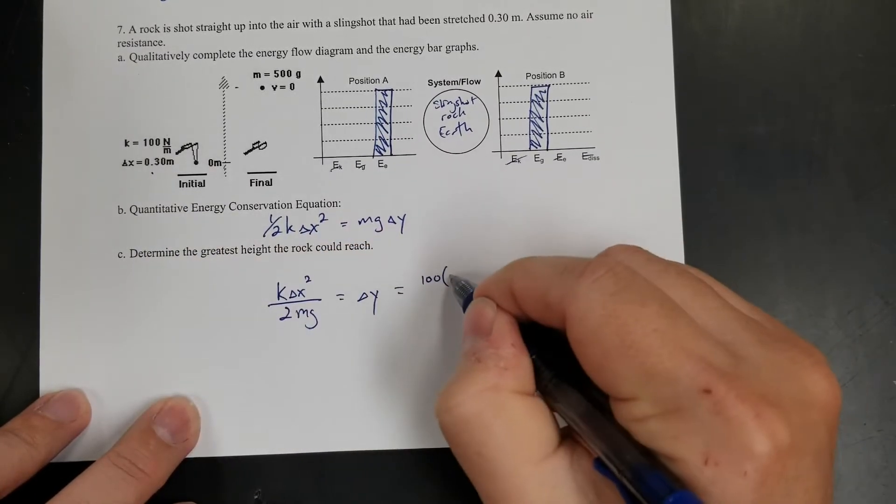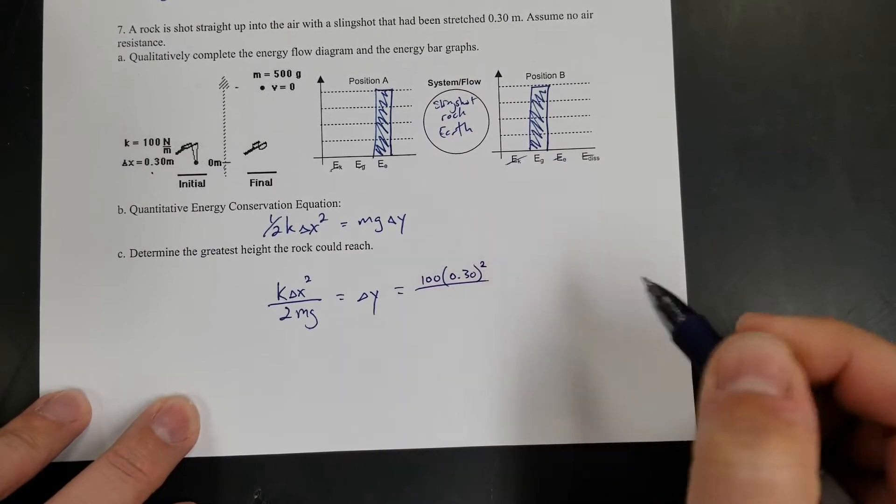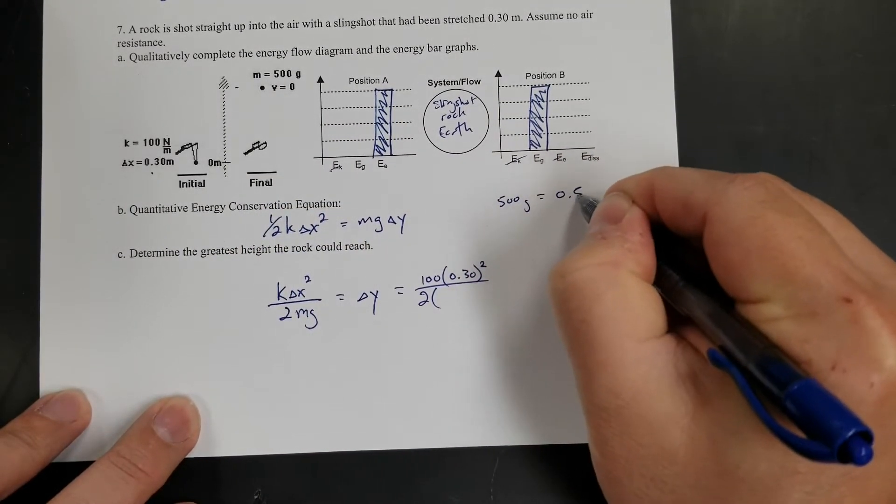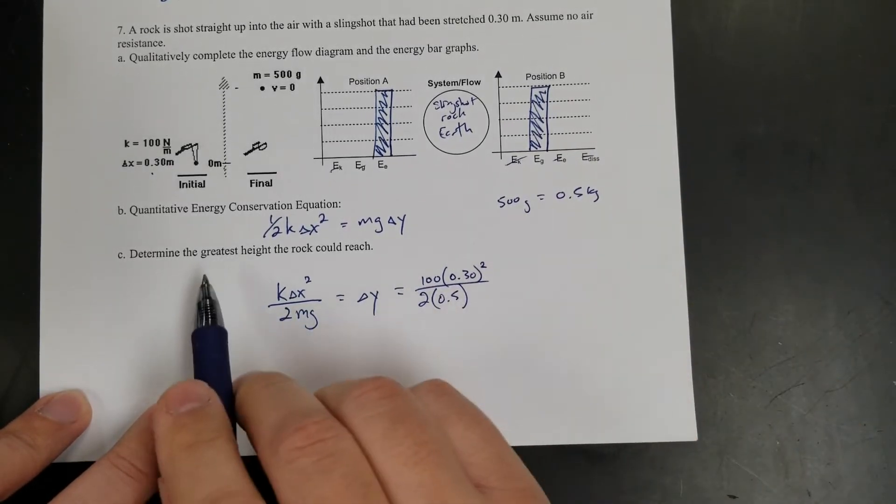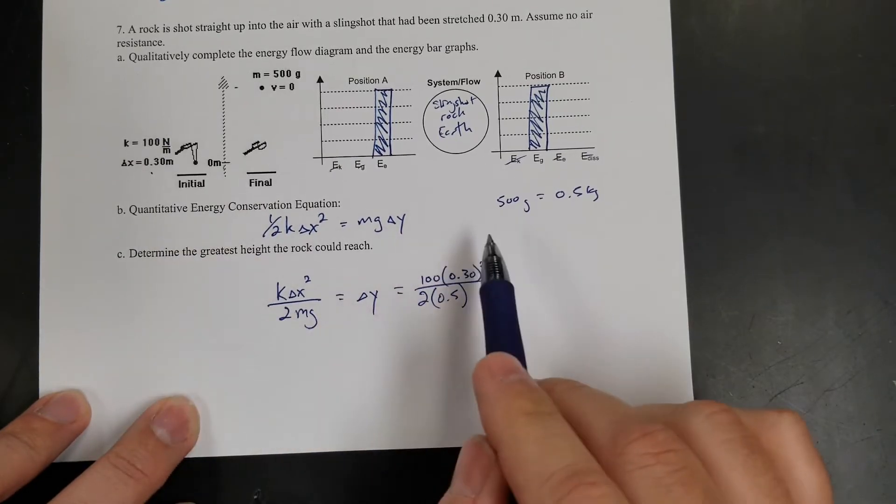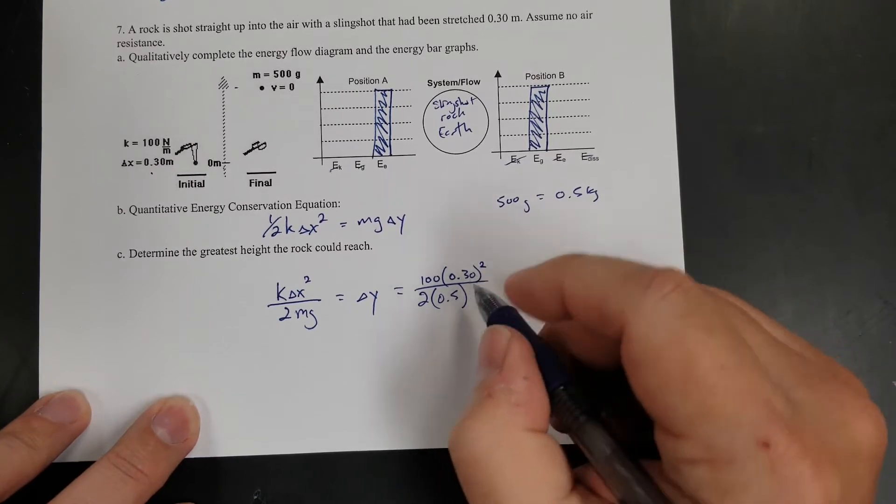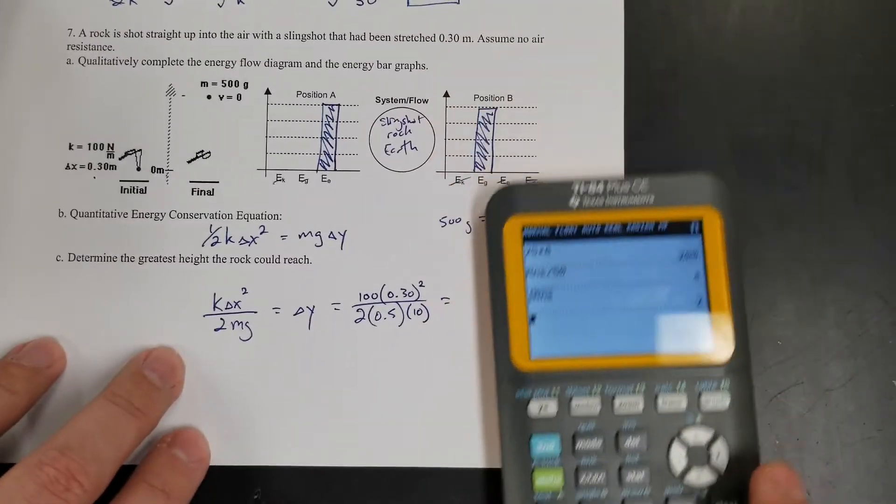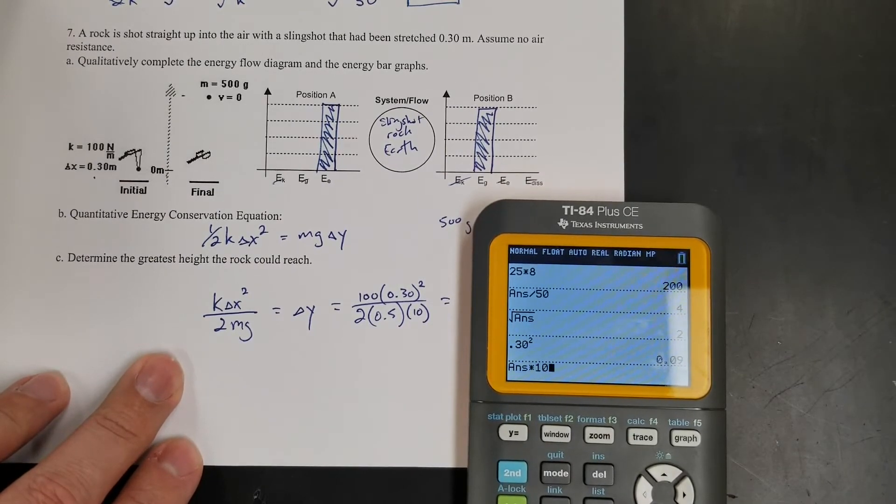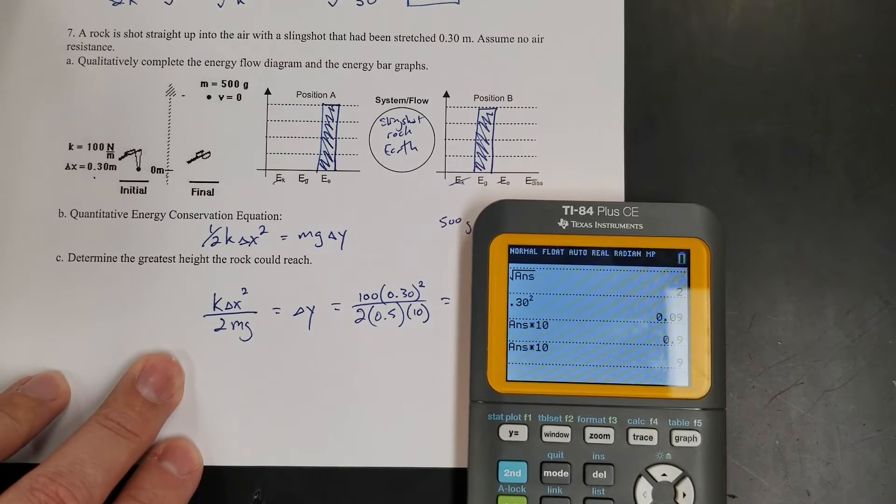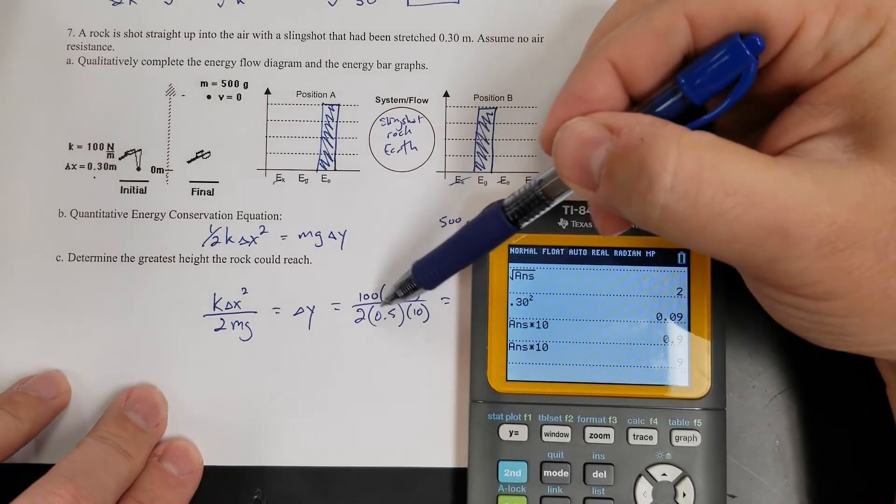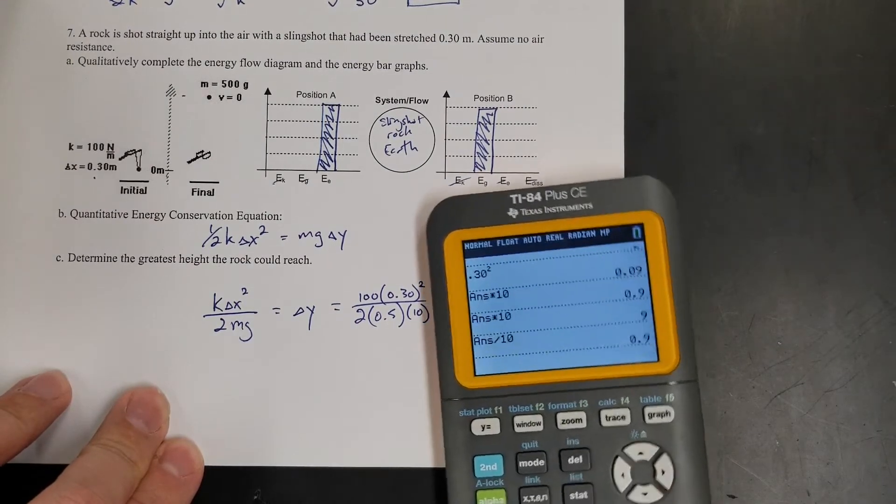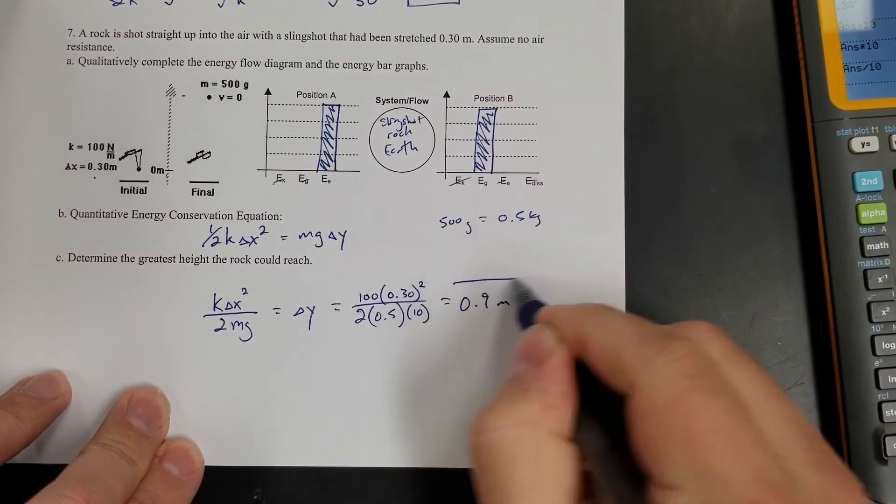So k is 100. My stretch is 0.30. So 0.30 squared over 2 times m is 500 grams. So 500 grams is 0.5 kilograms. Times, I did that right. G. G is 10. I'm just going to use 10 instead of 9.8. So let's do that. 0.30 squared times 100. I got 9 in the numerator. So 2 times 1 half times 10. 2 times 1 half is 1. 1 times 10 is 10. So 9 divided by 10 is 0.9 equals 0.9. So 0.9 meters.